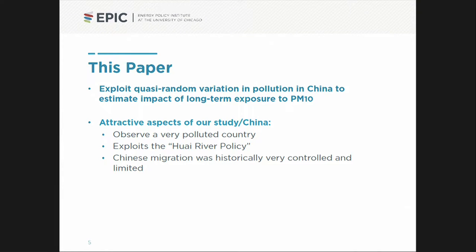The idea of this paper was to exploit a quirk in a policy China enacted during the planning period. They had enough money to provide heating in the winter, but only for part of the population. So they drew a line across the middle of the country and said everyone to the north of the Huai River gets free winter heating, provided by coal — small coal boilers without any pollution controls. And during most of this period, migration was limited, so people could not move in response to the air pollution.